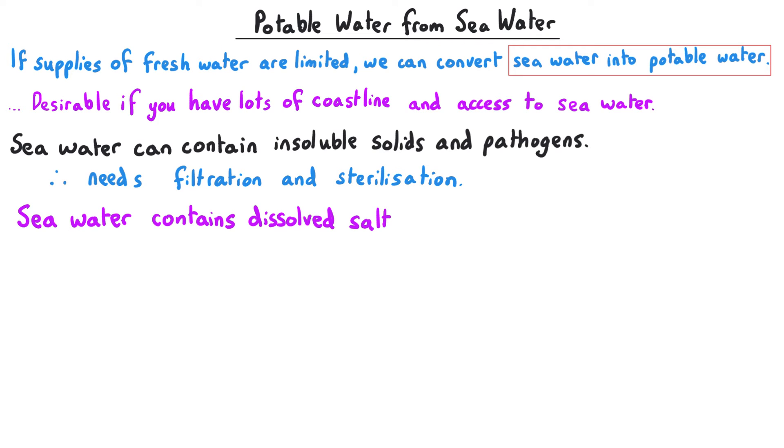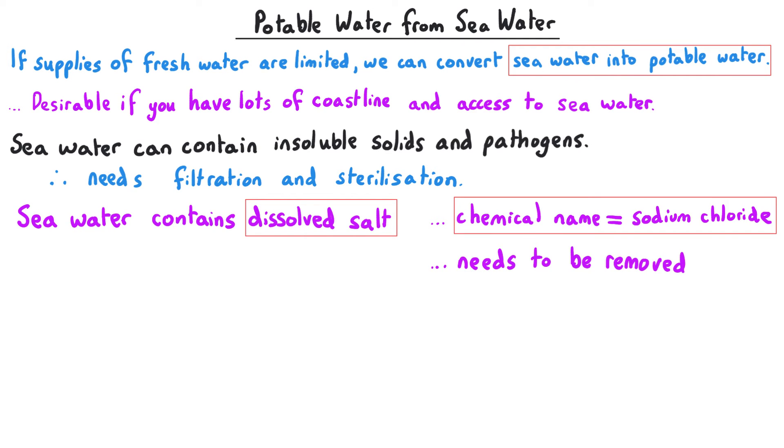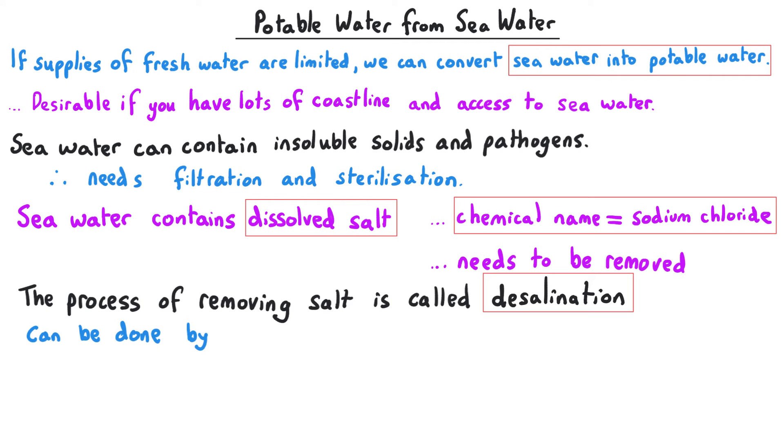Seawater also contains dissolved salt, which has the chemical name sodium chloride. This salt needs to be removed before the water can be considered potable. The process of removing salt is called desalination and has two main methods: reverse osmosis and distillation.